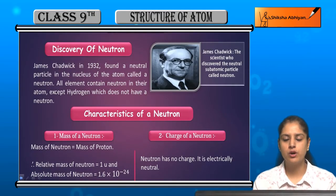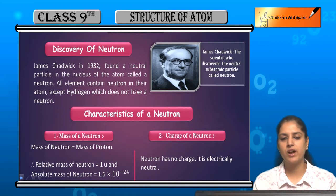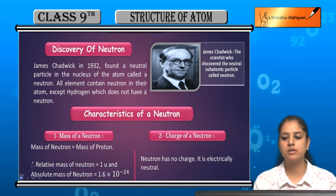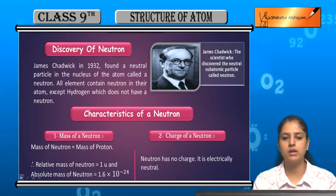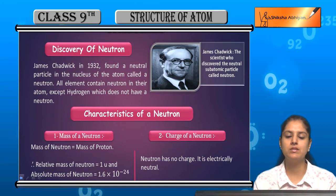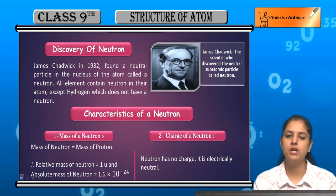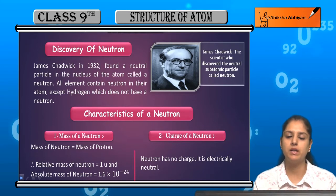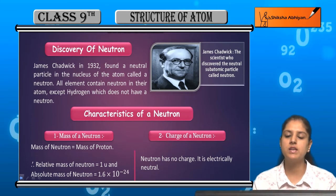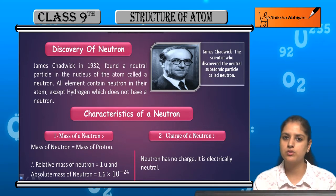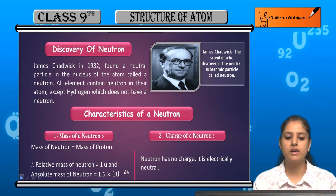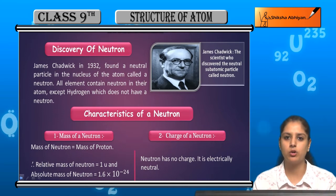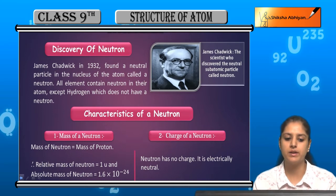Discovery of neutron. Neutrons were discovered by James Chadwick. He was a scientist who discovered the neutral subatomic particle called neutron. In 1932, James Chadwick discovered the neutron and told that there is a neutral particle. Previously, positively charged and negatively charged particles were known, and he told that there is a neutral particle also which is present in the nucleus of an atom.